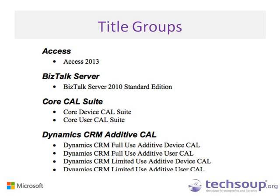A CAL is a client access license, used to give licensing to individual end users accessing the server. We'll cover more on that when we continue with the explanations.